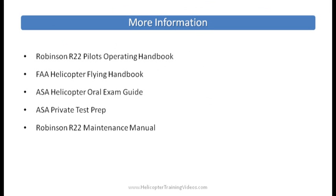For more information, check out the Robinson R-22 or R-44 POH pilot operating handbook. The FAA also produces the helicopter flying handbook, which you can download from their website. ASA produces a helicopter oral exam guide and a private test prep, both of which will cover systems questions to help you prepare for your private check ride or your written test. There's also the Robinson R-22 or R-44 maintenance manual you can download from Robinson. Any thoughts, questions, or feedback — we appreciate all those, please send them on.